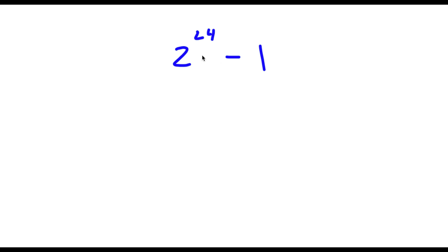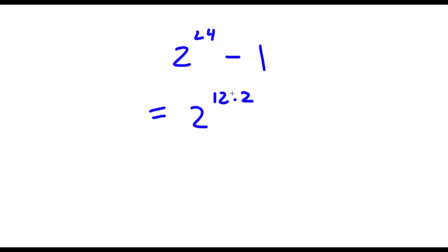Alright, so I have 2 to the power of 24 minus 1. So 2 to the power of 24 — 24 I can rewrite as 12 times 2. So now I have 2 to the power of 12 times 2, minus 1.